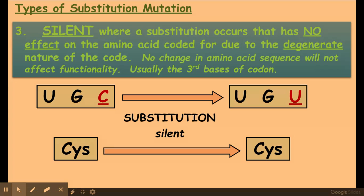A silent mutation is another example of a substitution mutation — here, C has been changed into U — but if you look at the codon wheel, it still codes for the same amino acid: cis to cis. This is called the degenerate nature of the genetic code, meaning more than one codon can code for a certain amino acid.